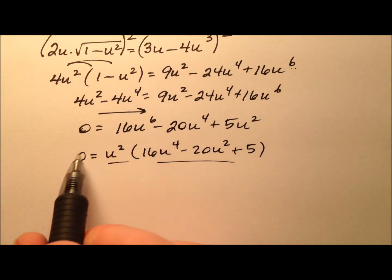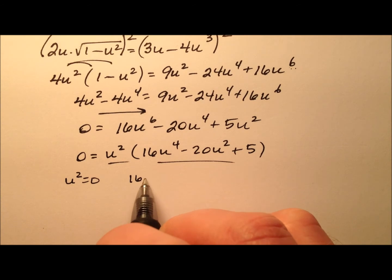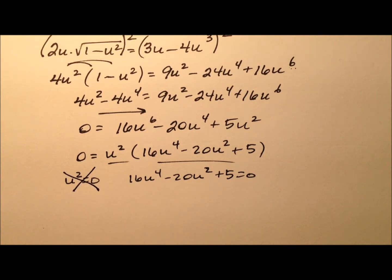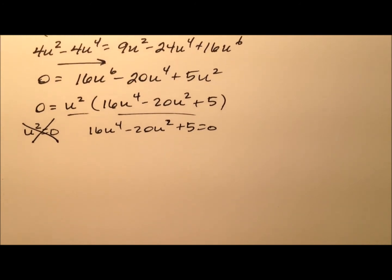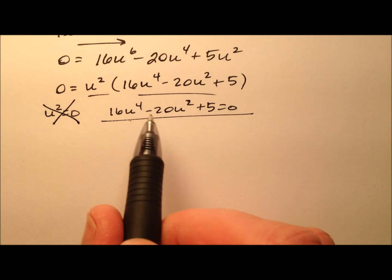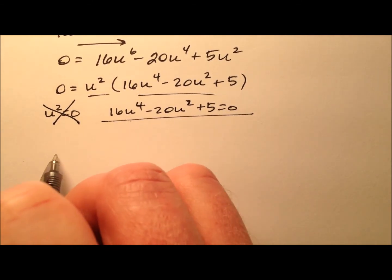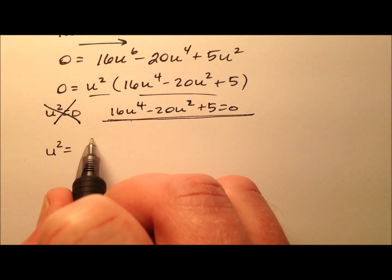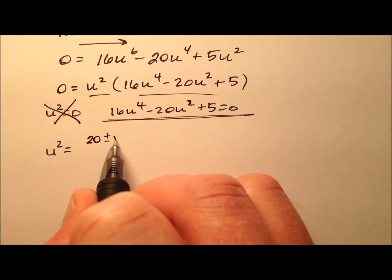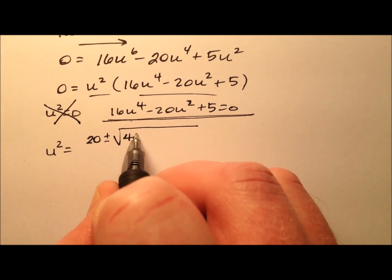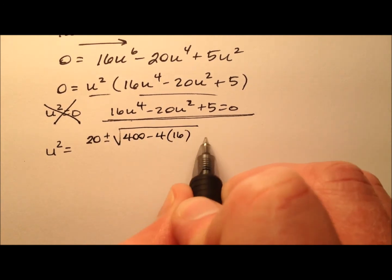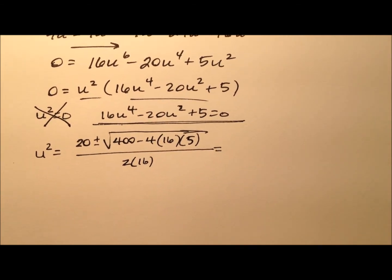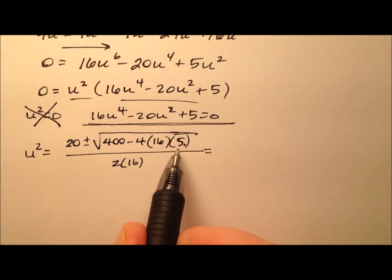Using the zero product property, u squared equals 0 is an extraneous value I don't care about. The remaining factor 16u to the fourth minus 20u squared plus 5 has powers 4, 2, and 0, so I can apply the quadratic formula with u squared as the variable. That gives u squared equals 20 plus or minus the square root of (400 minus 4 times 16 times 5), all over 2 times 16. Since 4 times 16 times 5 equals 320, we get the square root of 80 over 32.